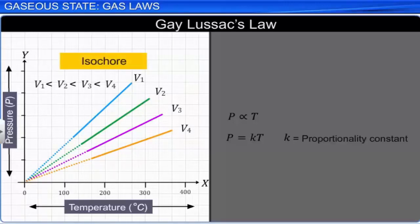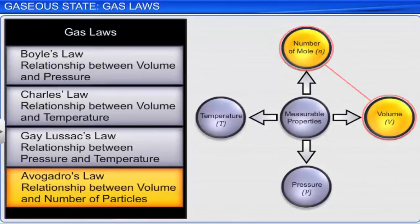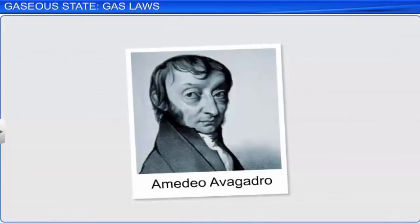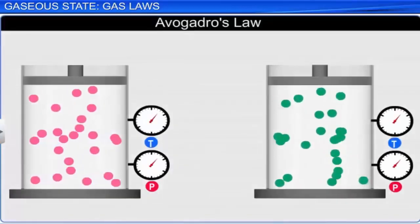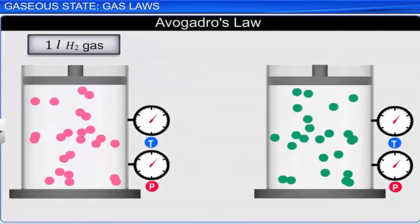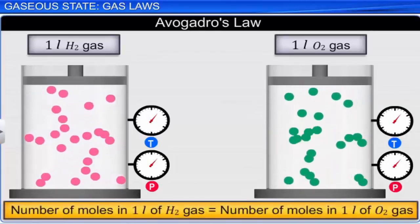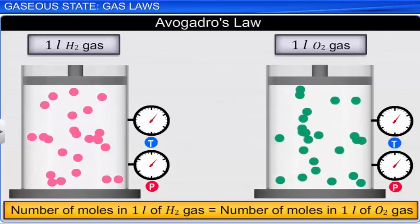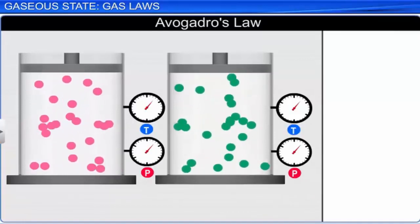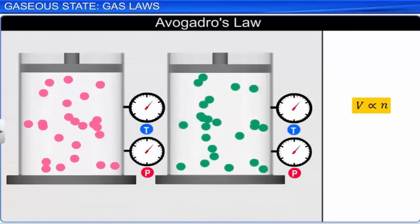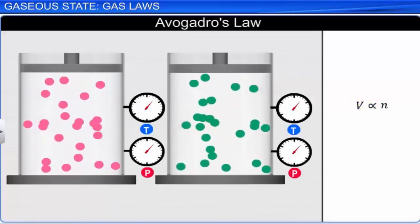The fourth gas law is Avogadro's law. In 1811, Italian chemist Amedeo Avogadro stated that at the same temperature and pressure, equal volumes of gases contain the same number of molecules irrespective of their chemical and physical properties. For example, consider 1 liter of hydrogen gas and 1 liter of oxygen gas. Then according to Avogadro's law, at the same temperature and pressure, both 1 liter of hydrogen and oxygen contain equal number of molecules. Mathematically, Avogadro's law can be written as V is directly proportional to n, where V is the volume of the gas and n is the number of moles of the gas. Replacing the proportionality sign by proportionality constant K, we get V equals nK.